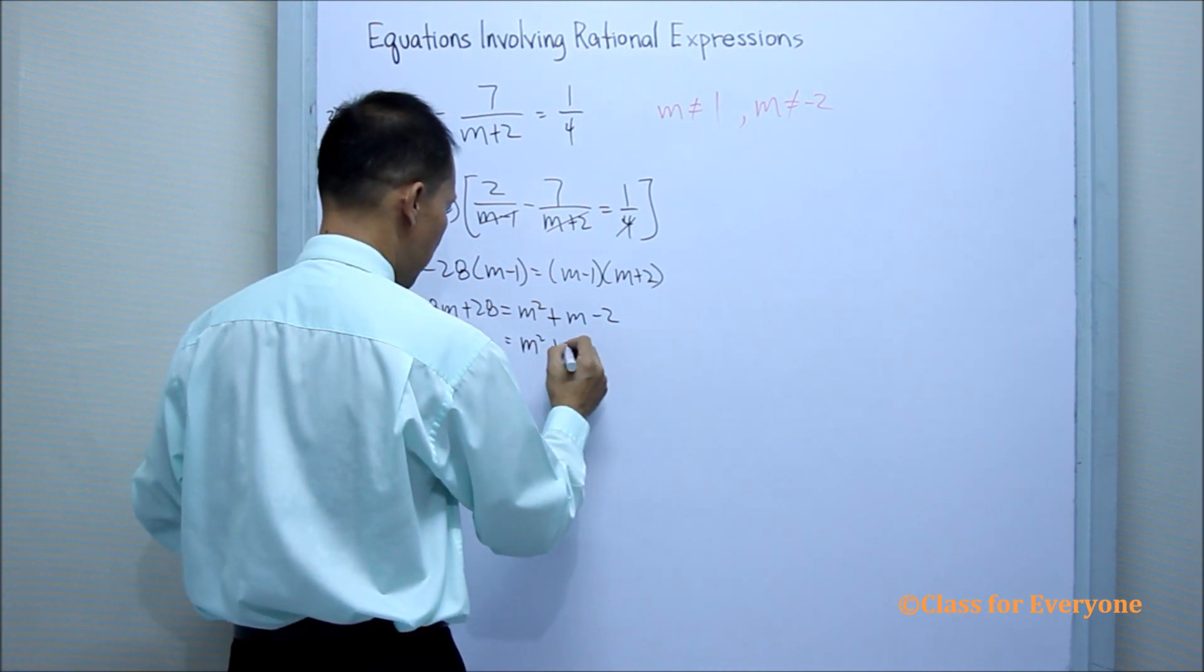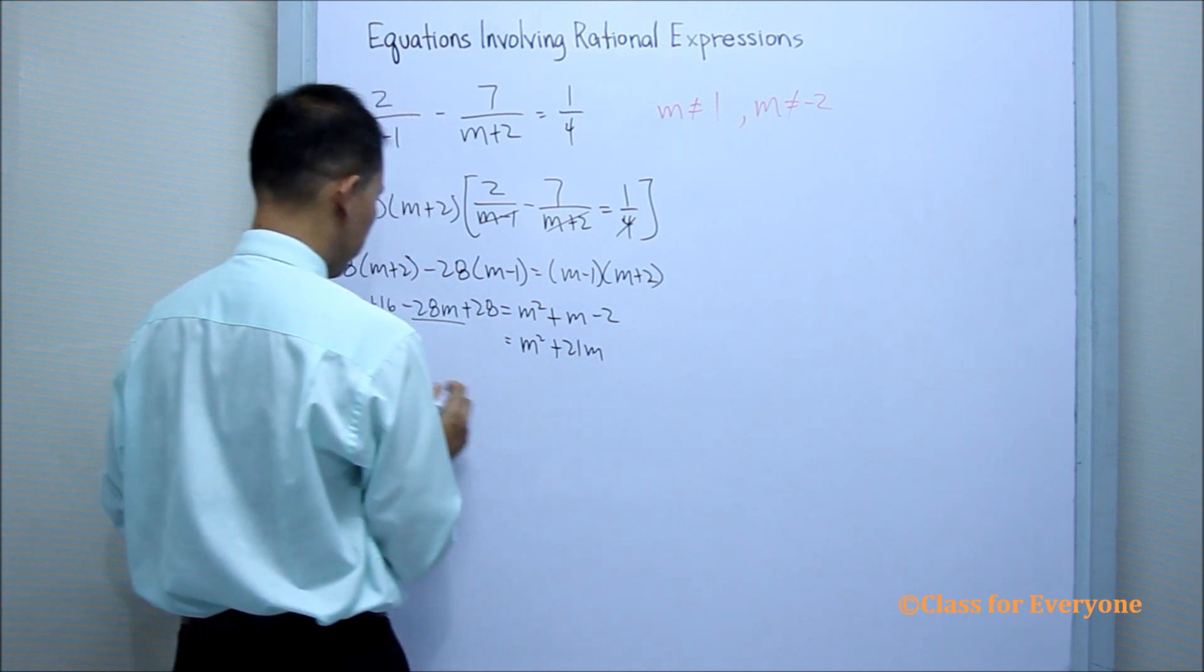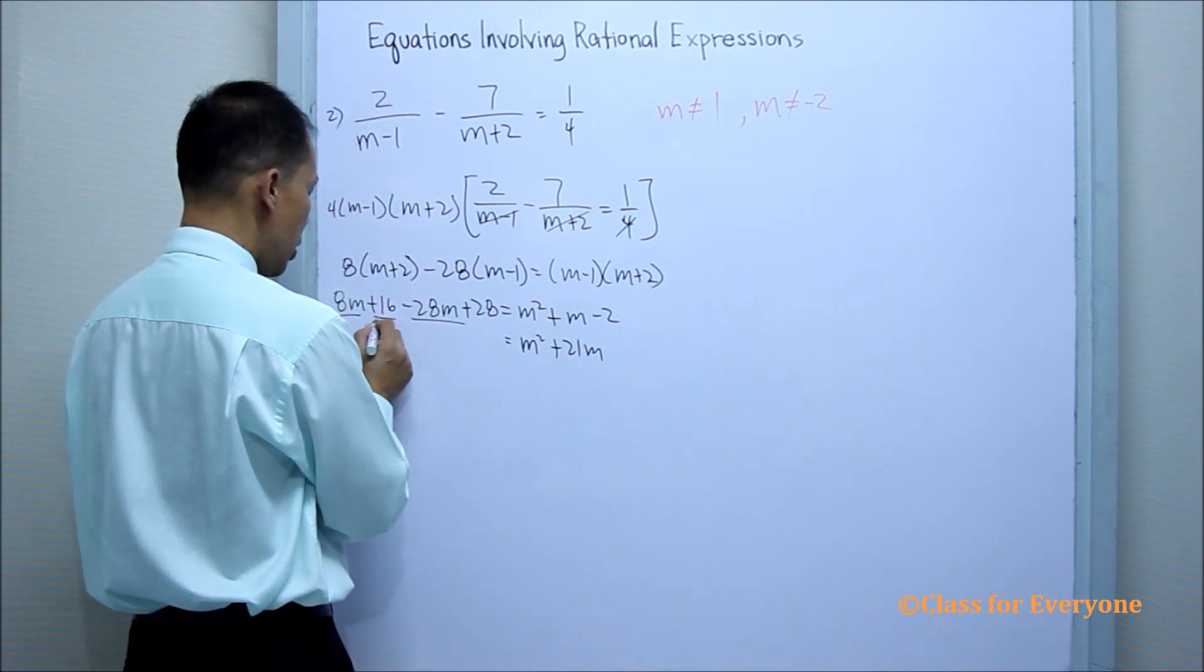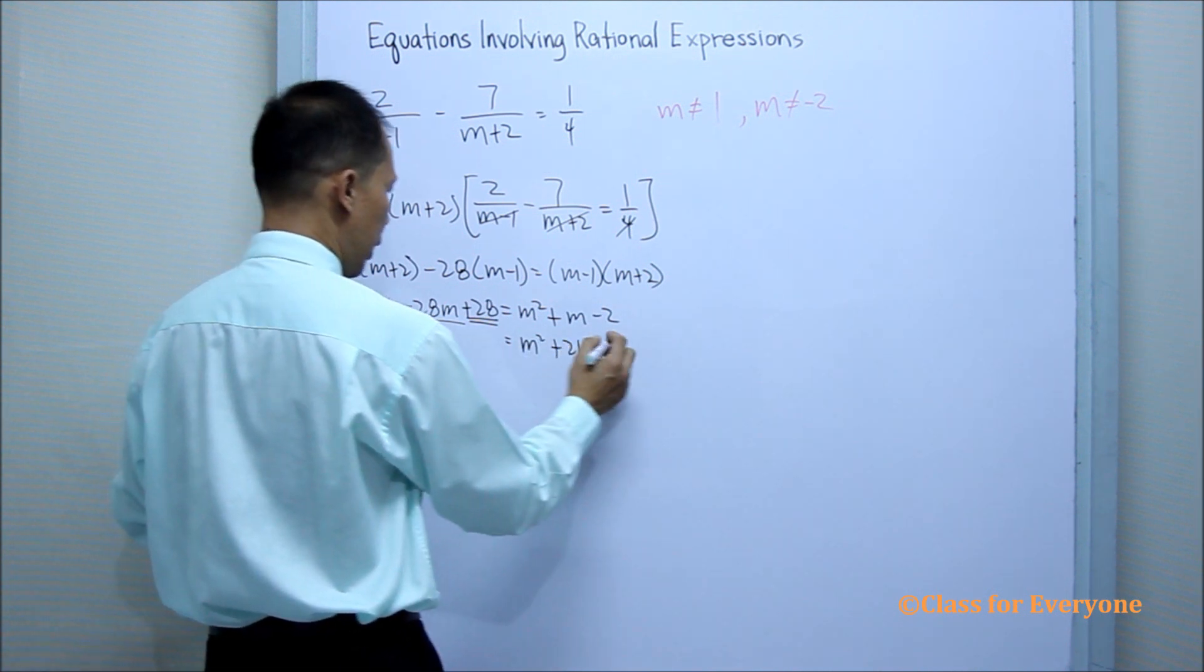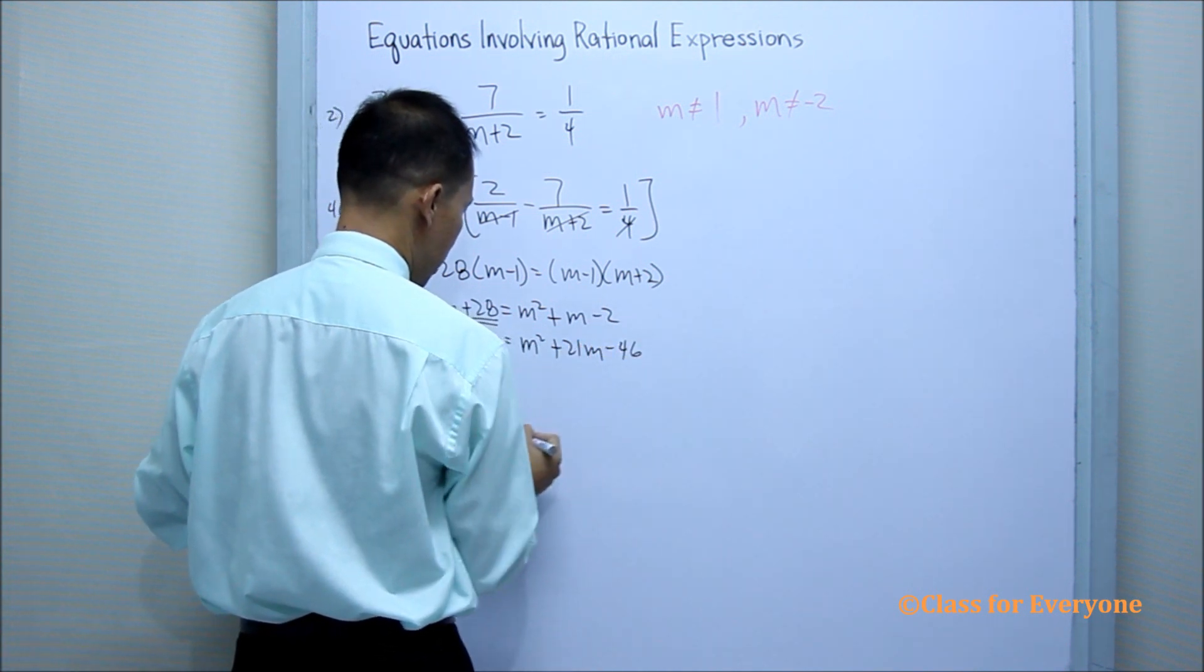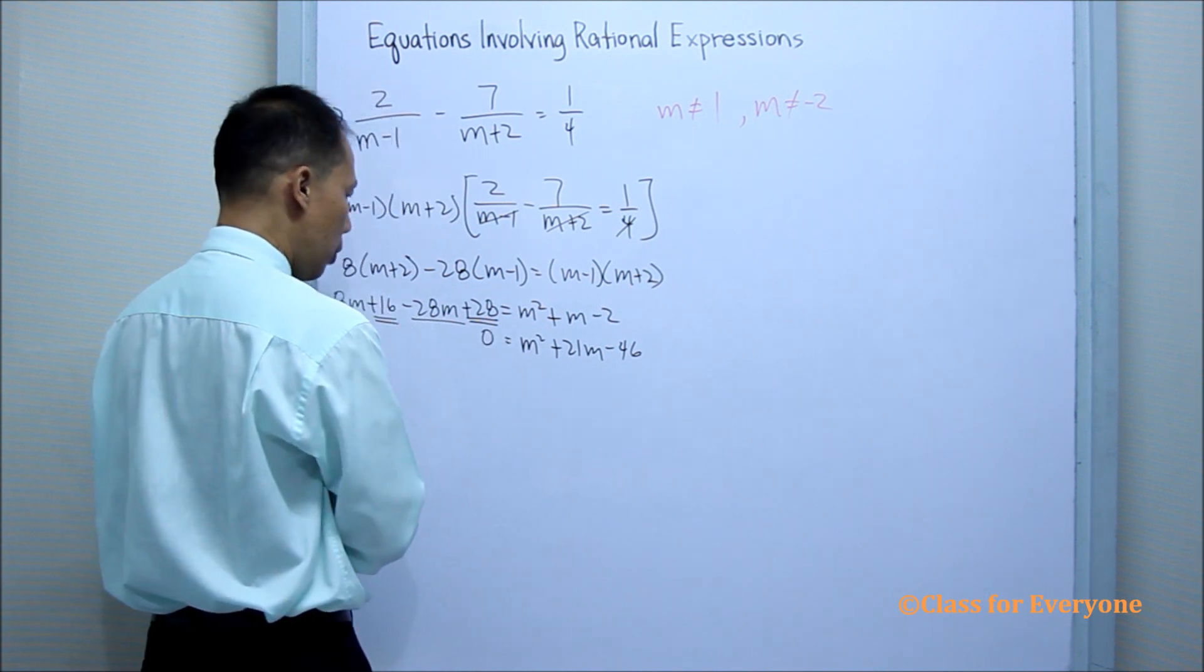8 m minus 28 m is negative 20 m. And then this will be positive 21 m. 16 plus 28 is 44. And this will be negative 46. The left side will be 0.